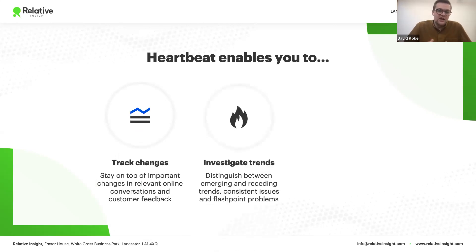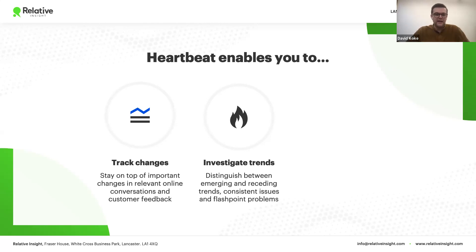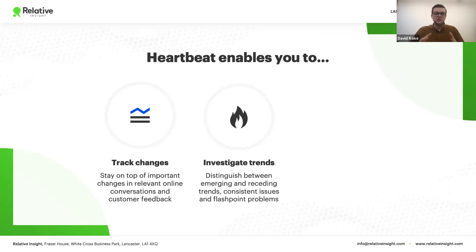Heartbeat helps you investigate trends and distinguish between emerging trends, receding trends, consistent issues, and flashpoint problems. This helps you overcome recency bias — the tendency when doing manual analysis to focus on the most recently read content and inflate its importance. For example, people might be complaining about the store experience this month, but it's back to normal next month. Heartbeat helps you focus on what's most impactful to your business rather than short-lived flashpoints.